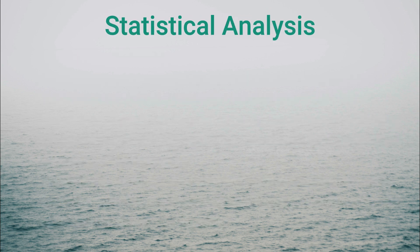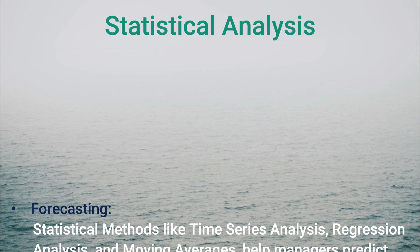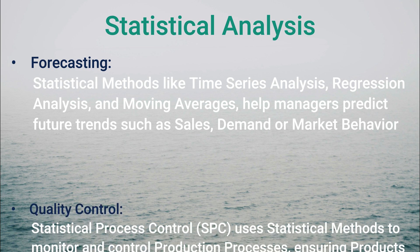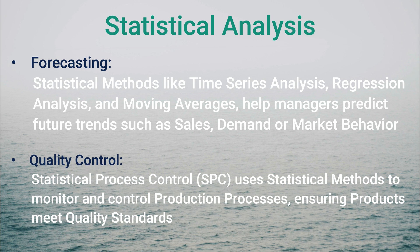2. Statistical Analysis: In forecasting, statistical methods like time series analysis, regression analysis, and moving averages help managers to predict future trends, such as sales, demand, or market behavior. In quality control, statistical methods are used to monitor and control production processes to ensure that products meet quality standards.